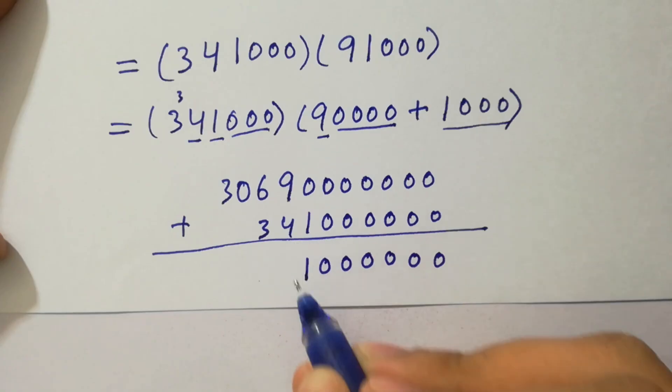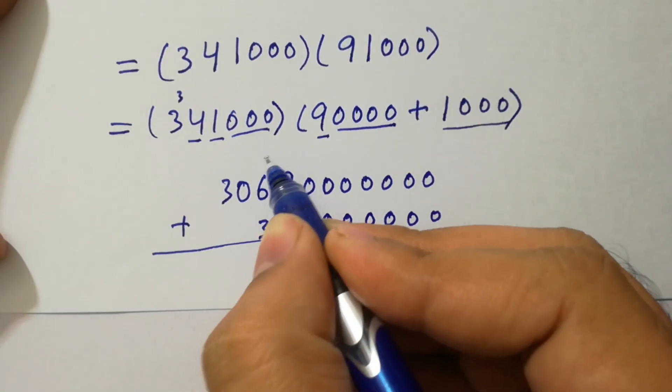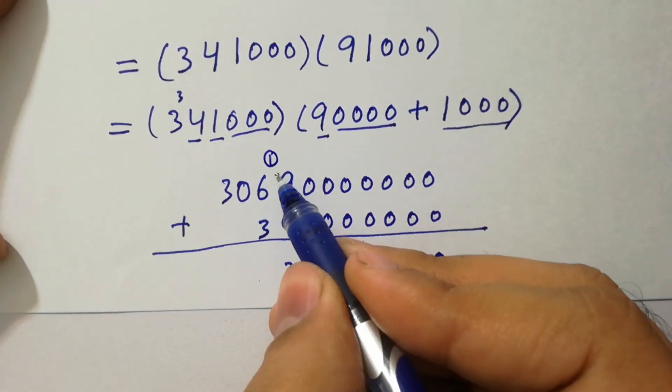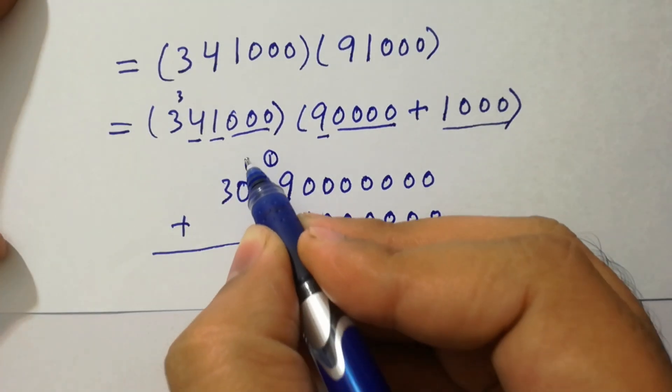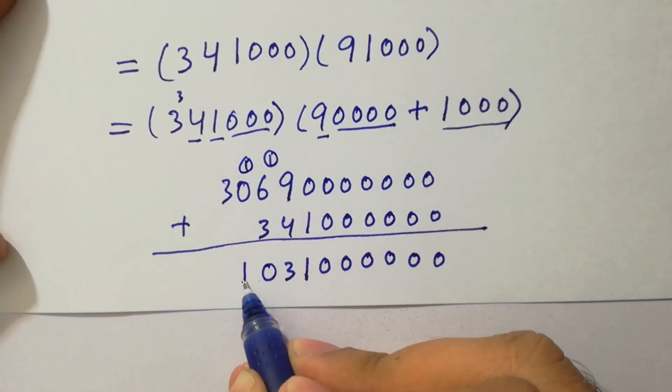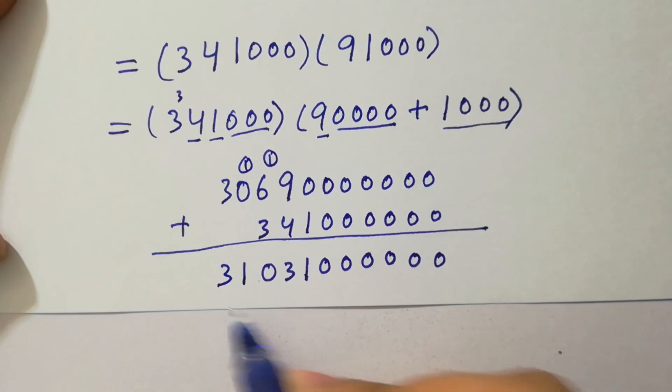9 plus 4 is 13. 3 here, 1 carry. Next, 6 plus 1 is 7. 7 plus 3 is 10. 0, 1 carry. 1 plus 0 is 1 and 3 as it is. So this is our final answer.